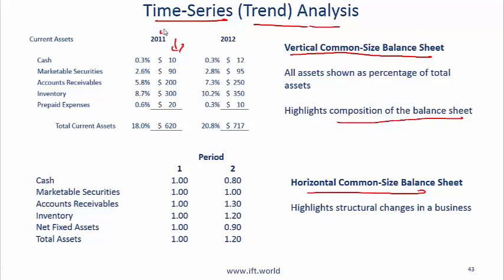For a given company between 2011 and 2012, what is changing? If you simply look at the dollar amount from 10 million to 12 million, that is going up. But if you look at the percentage number, cash is 0.3% of total assets in 2011 and 0.3% in 2012 — the composition is not changing. On the other hand, accounts receivable goes up in absolute terms from 200 to 250, but in percentage terms it increases from 5.8% to 7.3%, which is potentially an issue that needs to be looked into.